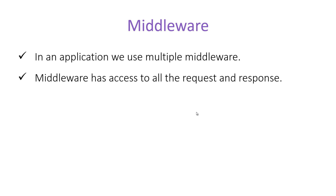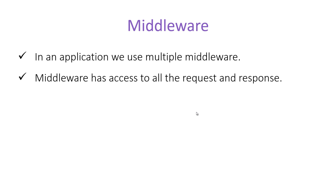These middlewares are used to add several features to our application. Since middleware has access to all the requests and responses, we can perform lots of things. For example, to implement logging into the application we need a centralized place where we can access all requests and responses — and middleware is that place. At the middleware, you can define your logging, because middleware has access to all requests and responses. By using middleware, you can create logs for each request and response.